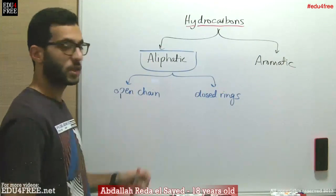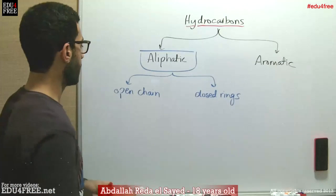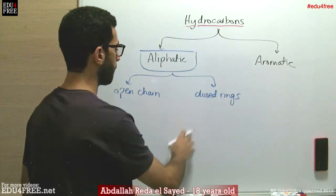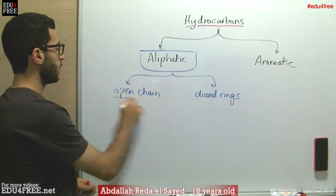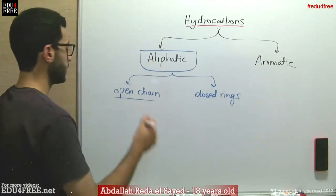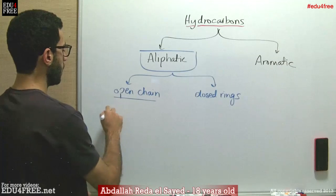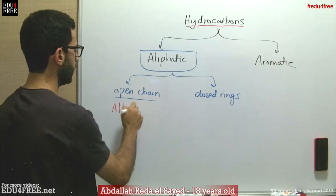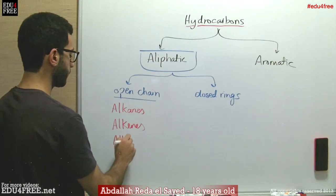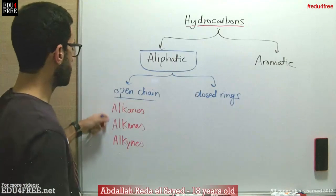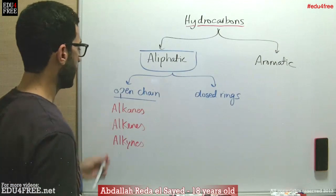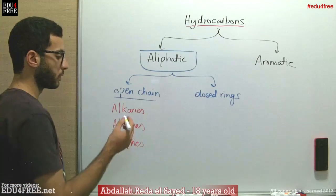The open chain hydrocarbons don't form rings. They just form straight lines or other shapes, but they don't form closed formations. The open chain hydrocarbons have three types: alkanes, alkenes, and alkynes.